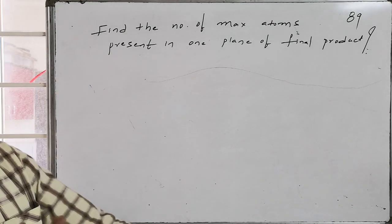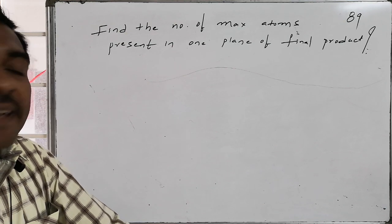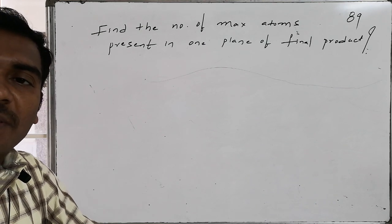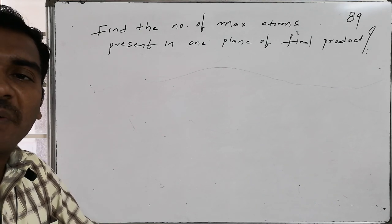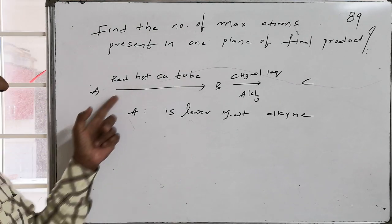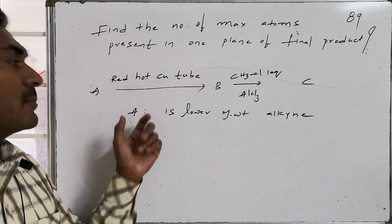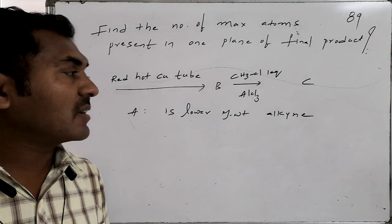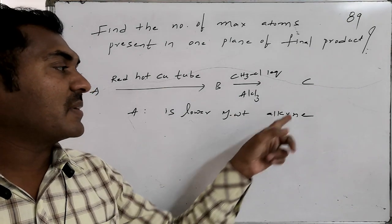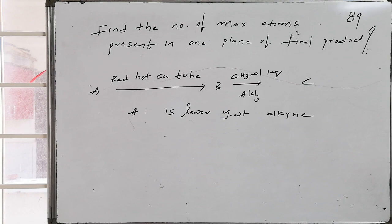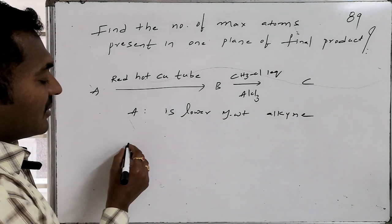A question is provided: find the number of maximum atoms present in one plane of the final product of a given sequence of transformations. The sequence consists of reactions where A is a lower molecular weight alkyne, subjected to a red hot copper tube at high temperature to give B. B is then reacted with methyl chloride and AlCl3 to give C. We need to calculate the maximum number of atoms present in one plane of C.